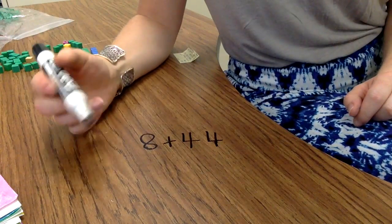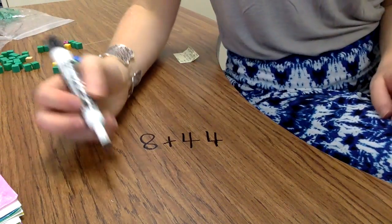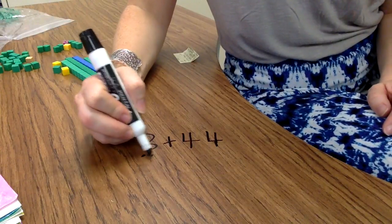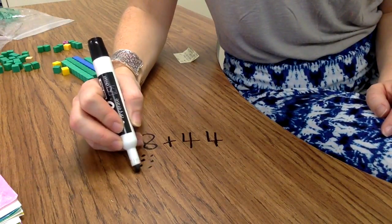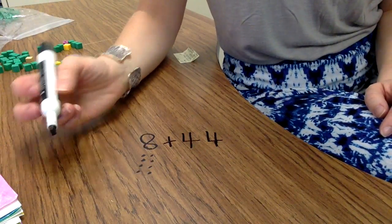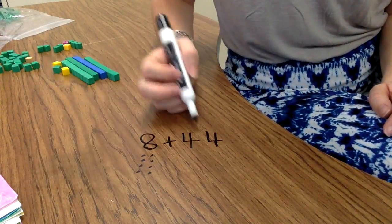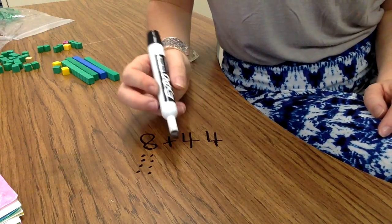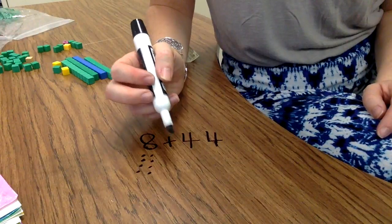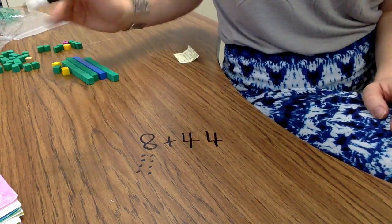So I'm going to draw what I just built with the rods and units. So I'll start with 1, 2, 3, 4, 5, 6, 7, 8. There's my 8 ones. That's my first addend. Now I'm going to do the second addend of 44 and I'll draw a picture representation of the rods and the units.